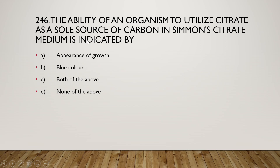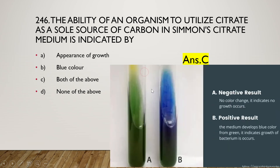Next question: the ability of an organism to utilize citrate as a sole source of carbon in Simmons citrate medium is indicated by appearance of growth, blue color, both, or none? The right answer is option C — both appearance of growth and blue color indicate a positive Simmons citrate utilization result. The normal medium is green; if bacteria utilize citrate as a carbon source the medium turns blue, indicating a positive result.